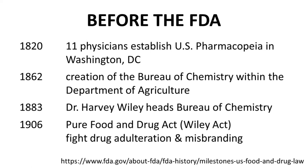It was not until 1862 that the government formed a Bureau of Chemistry, which was part of the Department of Agriculture. Approximately 20 years later, in 1883, Dr. Harvey Wiley became the head of the Bureau of Chemistry. Dr. Wiley is important because he pushed for changes that eventually led to the 1906 Pure Food and Drug Act, which was sometimes called the Wiley Act. This piece of legislation tried to address problems of adulteration and misbranding in both drugs and food.